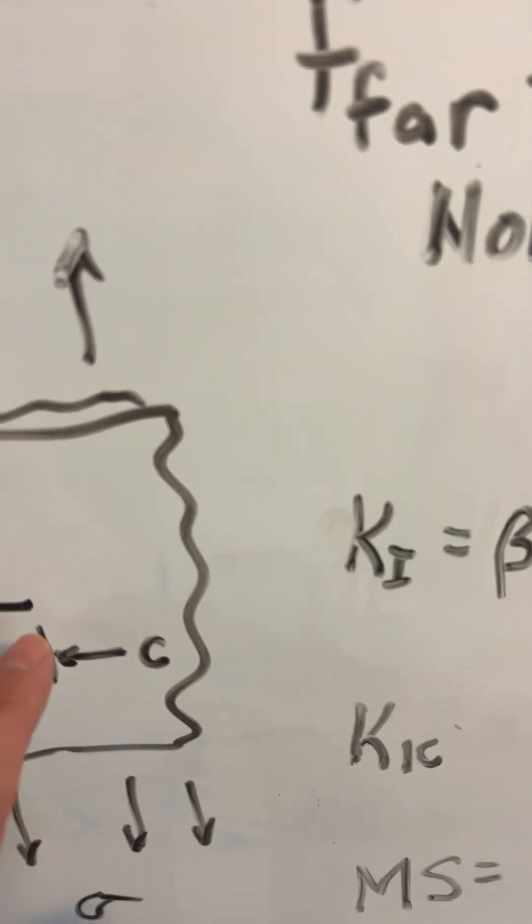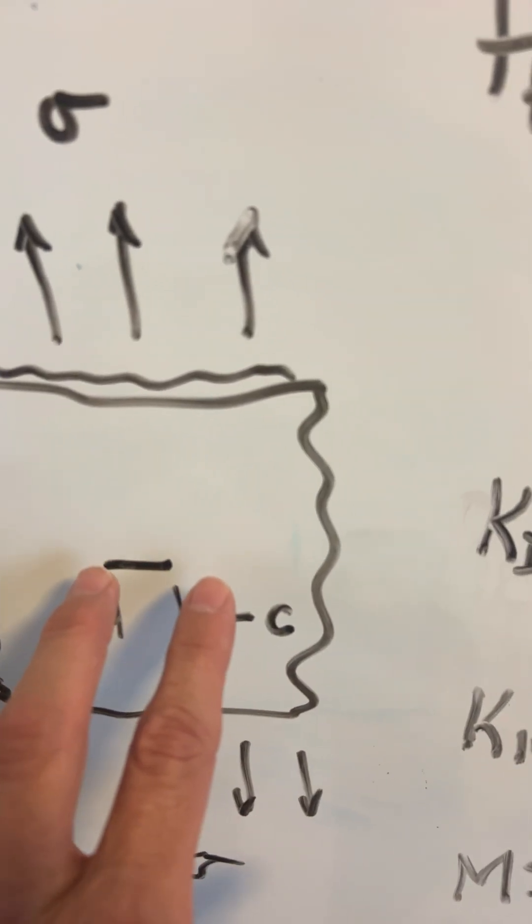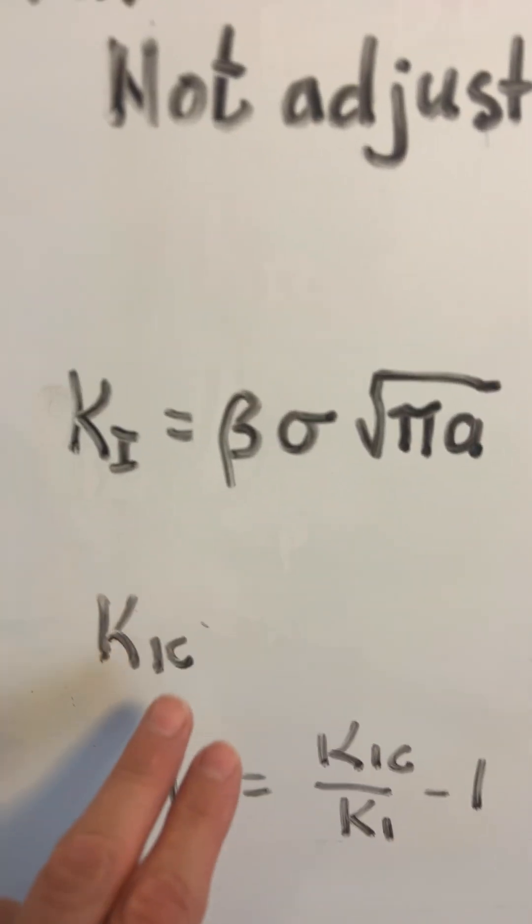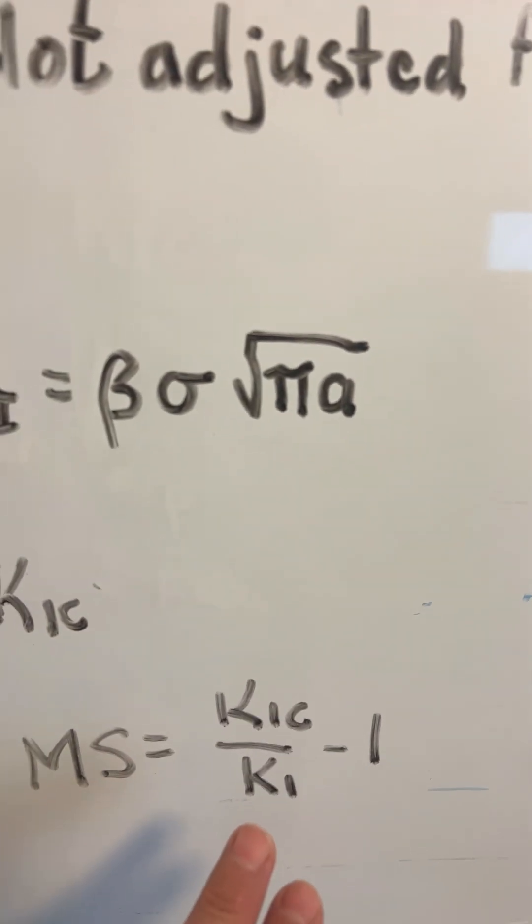The crack parameter A, in this case, is one-half of the crack length. Different cracks will have a different crack parameter. You compare that against K1c, and you can write the margin of safety like this.